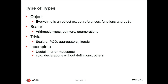Another classification of types: you have objects. Basically every variable you have in your program is an object, except for references, functions, and void. Everything else is an object. The scalar types are the arithmetic types, pointers, and enumerations. There are trivial types, which are POD, aggregates, and scalars.